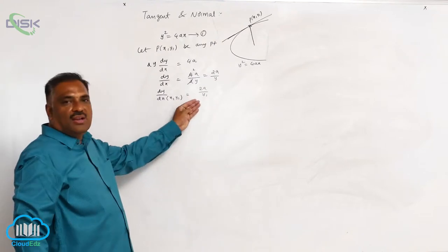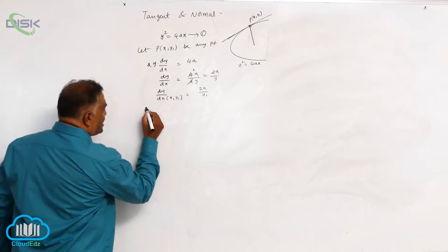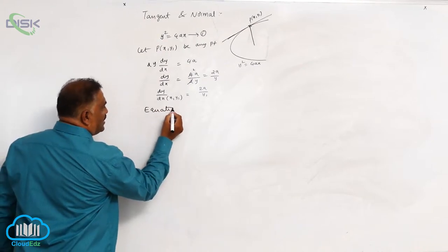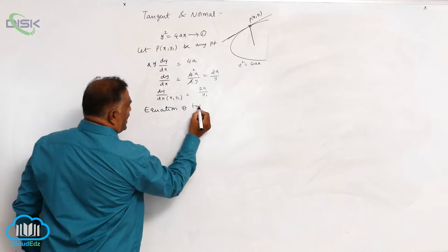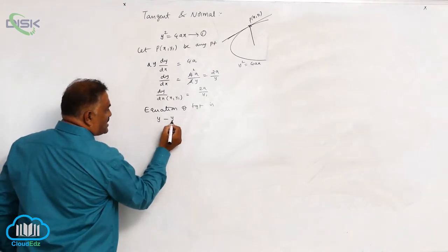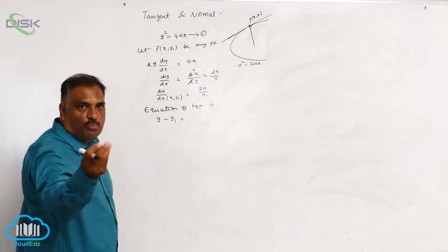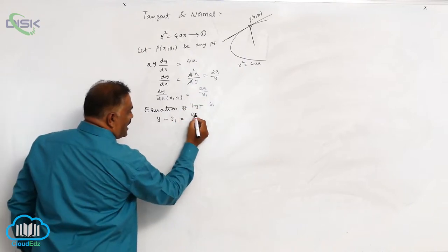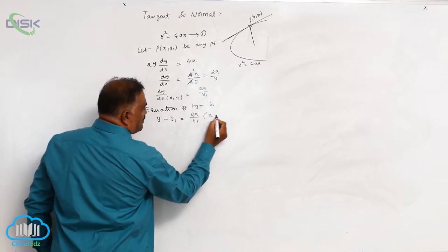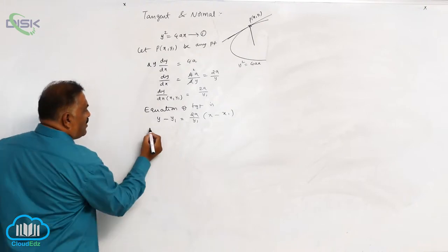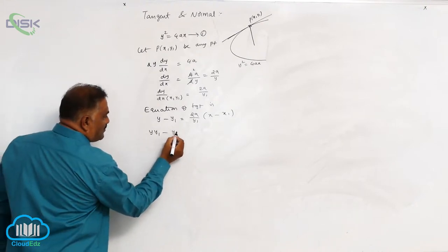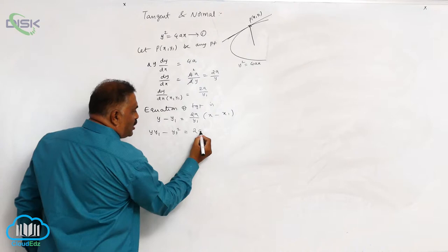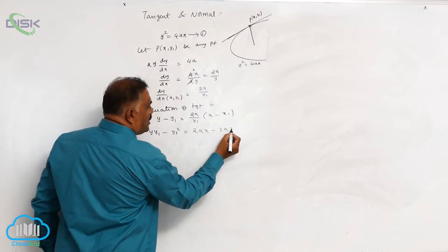This is going to be the slope of tangent. The equation of tangent is y minus y1 is equal to 2a by y1 into x minus x1. Cross multiplication gives yy1 minus y1 square is equal to 2ax minus 2ax1.